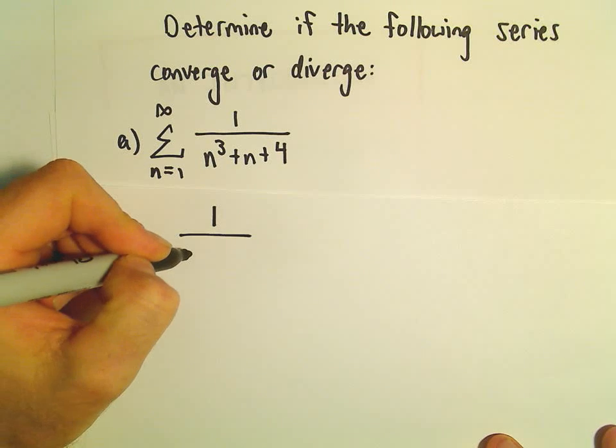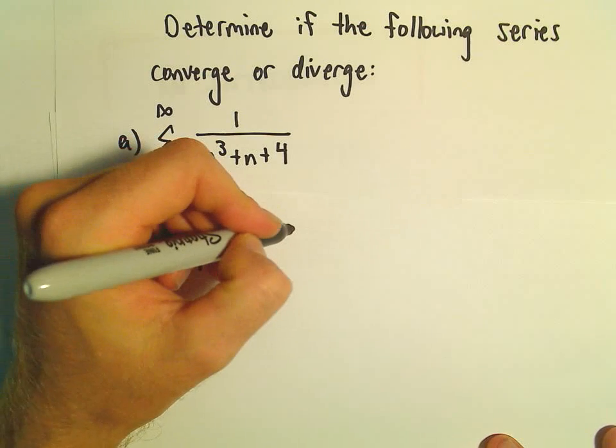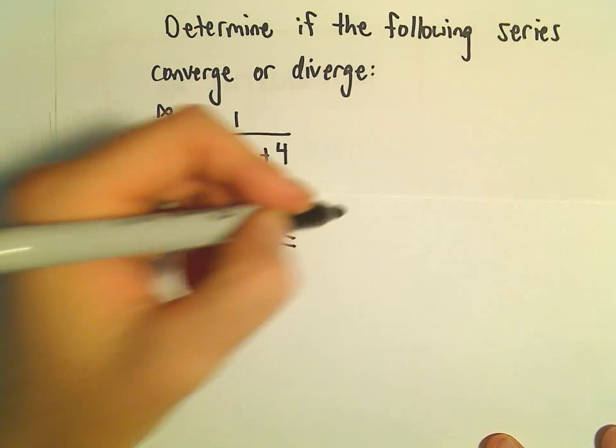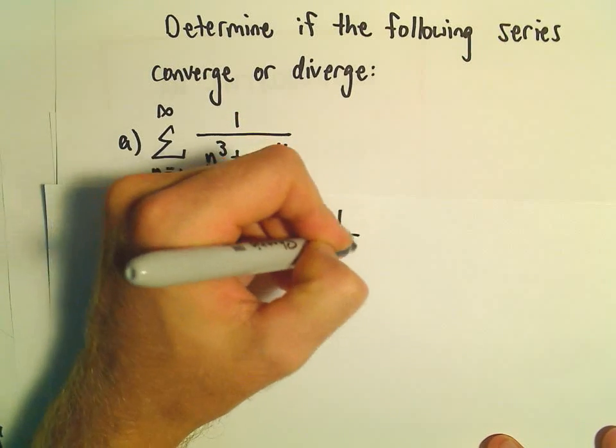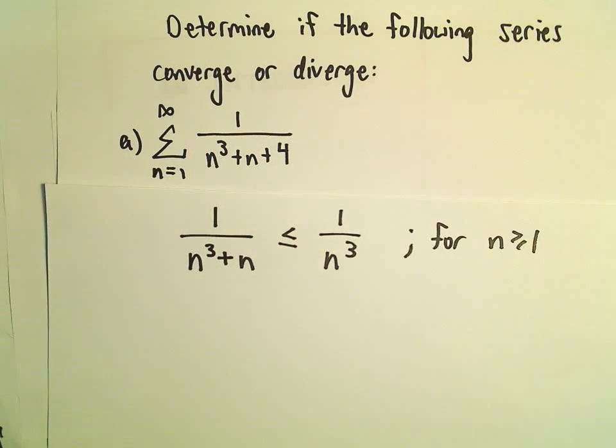So if we think about it, 1 over n cubed - if we add n to it, I claim that's going to be less than or equal to 1 over n cubed. And this is for n values greater than or equal to 1. This would be true.